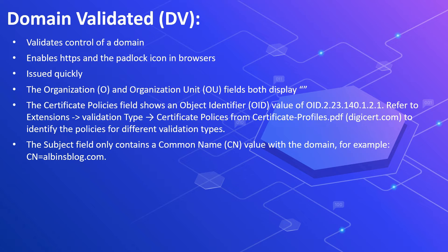DV (Domain Validated) SSL is best for personal project websites and blogs, and it is the least expensive option. It requires the website owner to verify that the domain is registered to them. DV SSL validates control of a domain, enables HTTPS and the padlock icon in browsers, and can be issued quickly since only ownership verification is needed. The organization and organization unit fields display blank in the certificate. In the certificate policy, there is a specific OID value of 2.23.140.1.2.1 specific to DV certificates. The subject field only contains a common name (CN) value with the domain, for example CN=albinsblog.com.